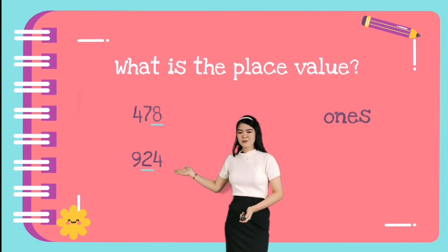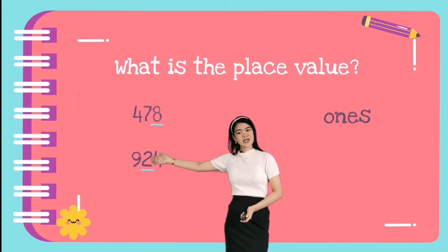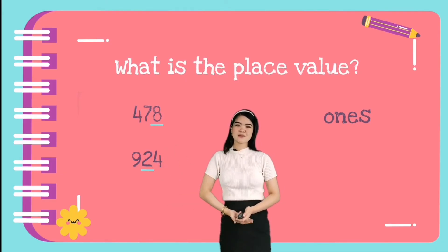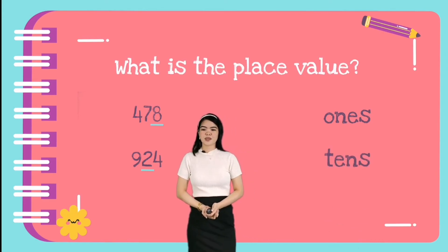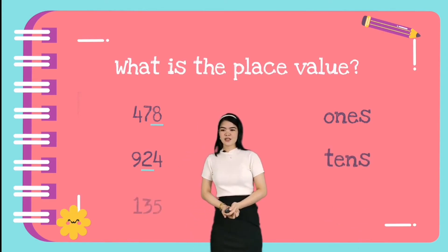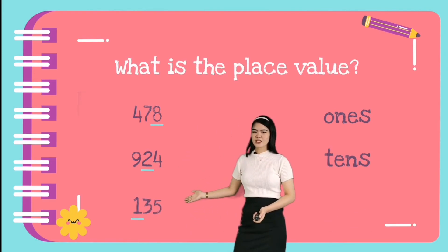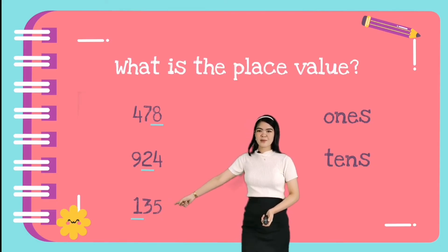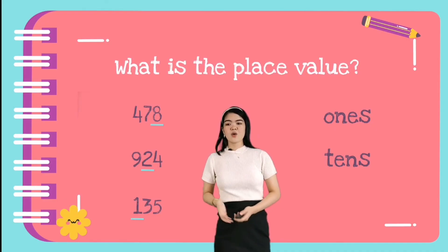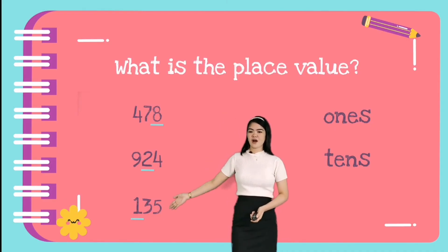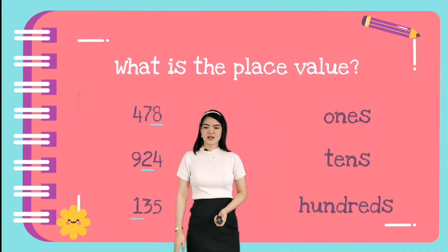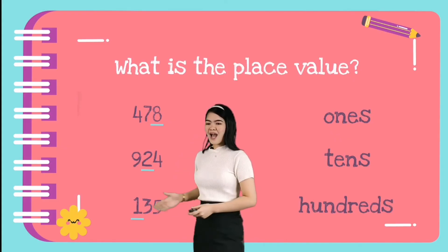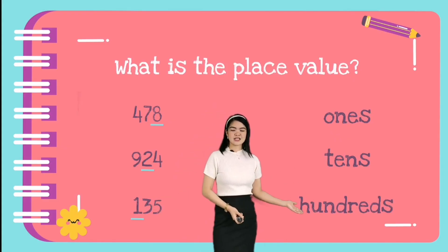How about 924? The underlined number is 2. Where is the place value of 2? What is the place value of number 2? Tens — very good. Next, we have 135. What is the place value of 1? What is the place value of number 1? Hundreds. So 1 is in the hundreds place.